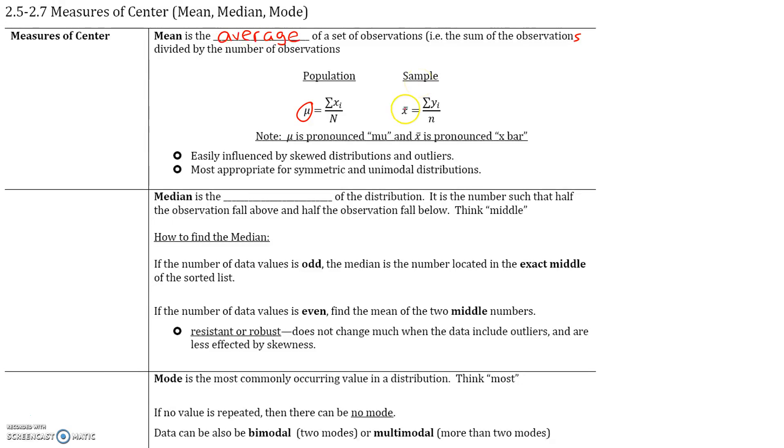Sample mean is given by x bar. Once again, x bar is the sum of all the data values divided by the number of data values. Note, mu is pronounced mu and x bar is pronounced x bar. The mean is easily influenced by skewed distributions and outliers. It's most appropriate for symmetric and unimodal distributions. If it's skewed, then the mean may not be the best measure of center.